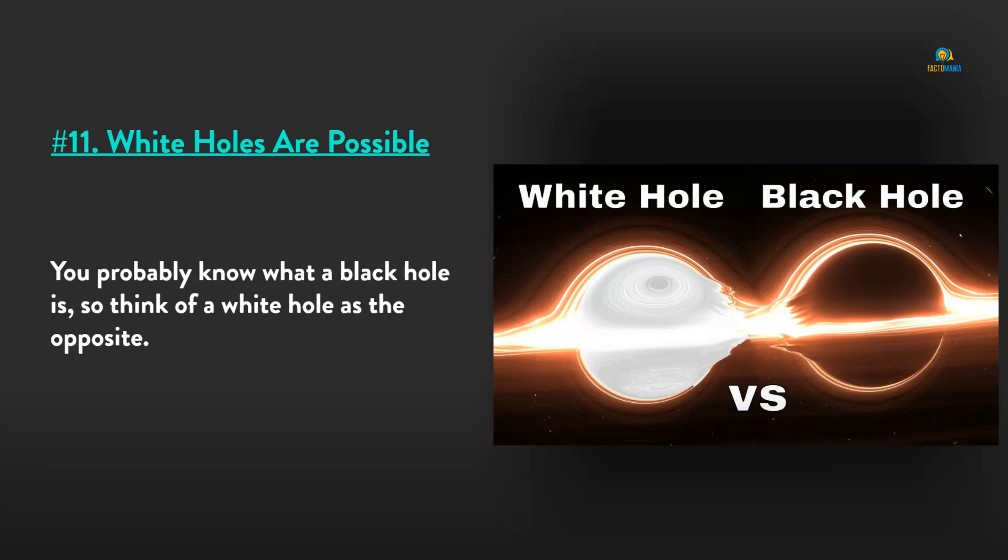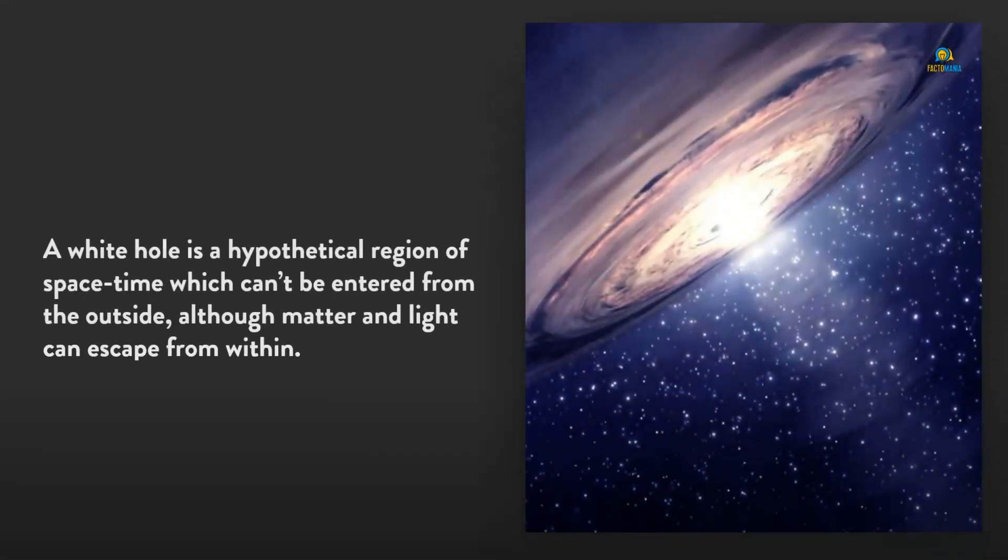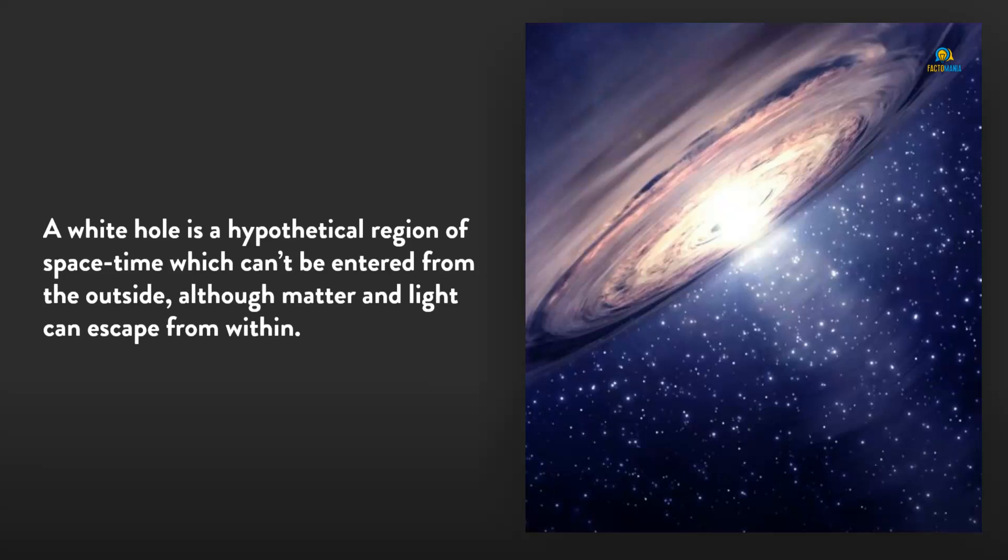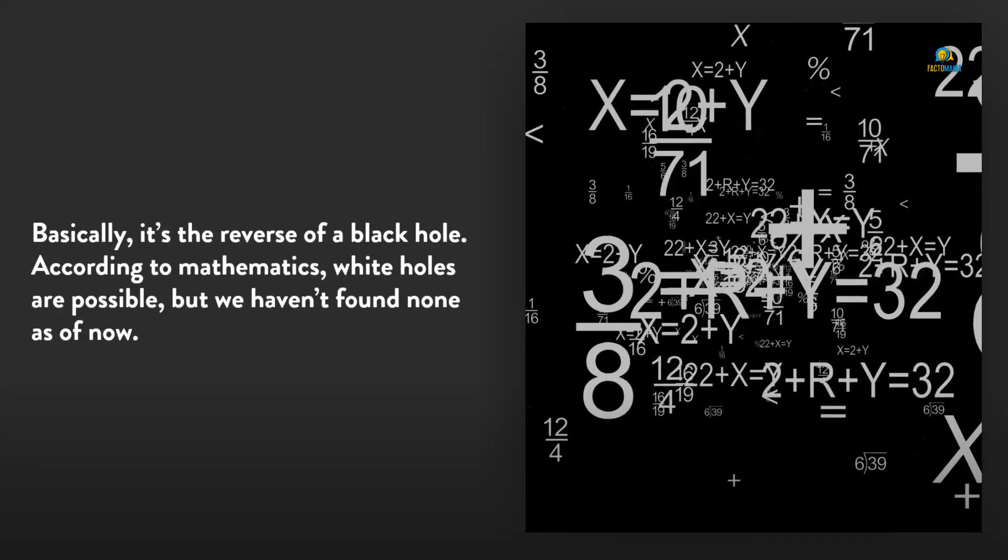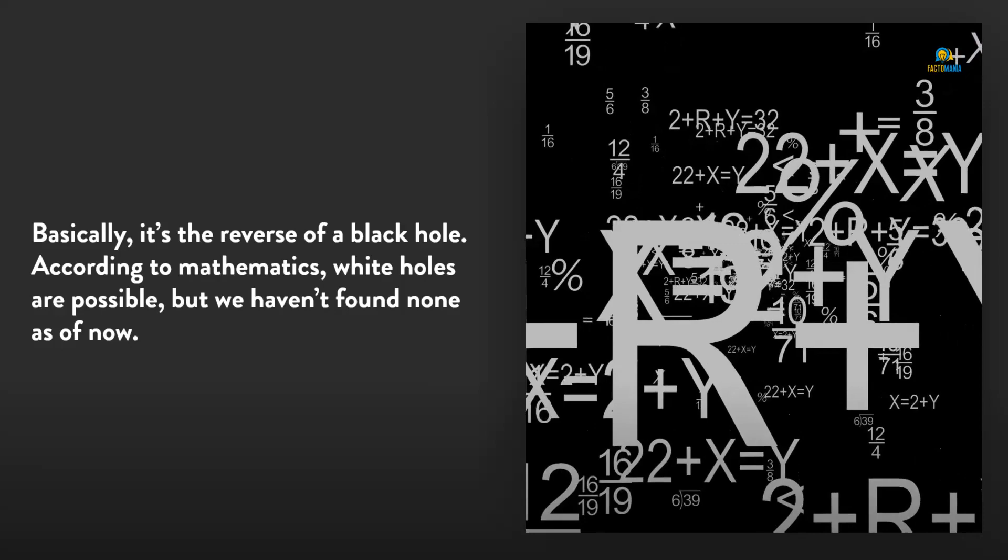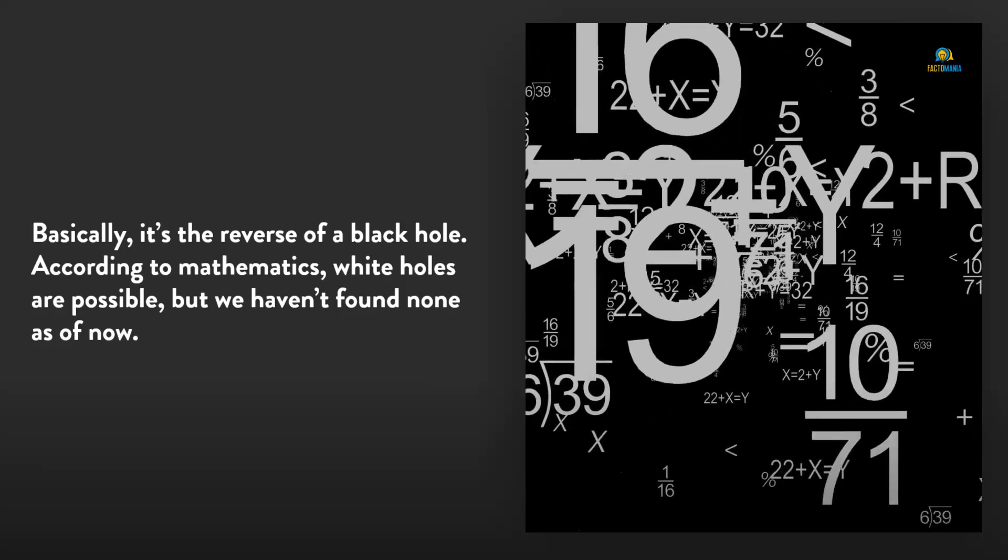Number 11: White holes are possible. You probably know what a black hole is, so think of a white hole as the opposite. A white hole is a hypothetical region of spacetime which can be entered from the outside, although matter and light can escape from within. Basically, it's the reverse of a black hole. According to mathematicians, white holes are possible, but we haven't found any as of now.